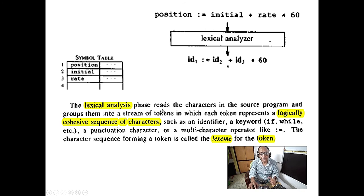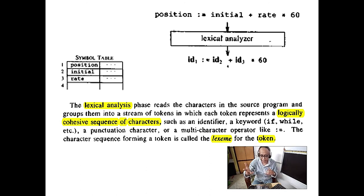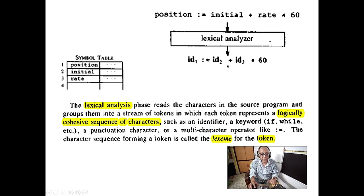The lexical analysis phase reads the characters in the source program and groups them into a stream of tokens. Each token represents a logically cohesive sequence of characters — such as an identifier, a keyword like 'if' or 'while', a punctuation character, a multi-character operator, an assignment operator. The character sequence of a formed token is called a lexeme.